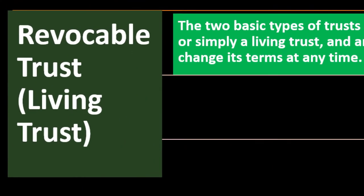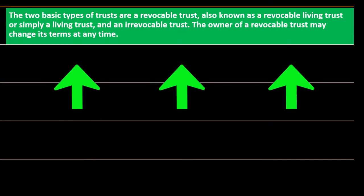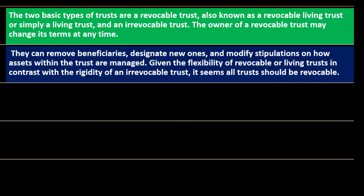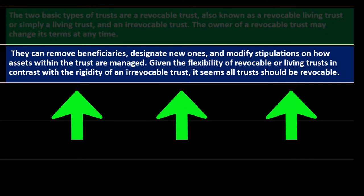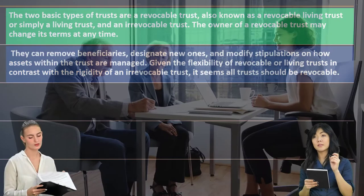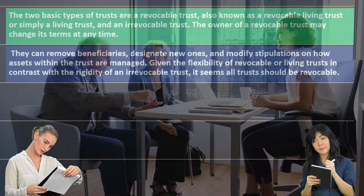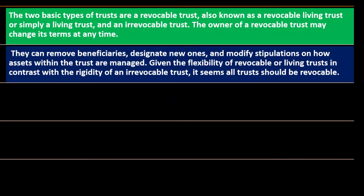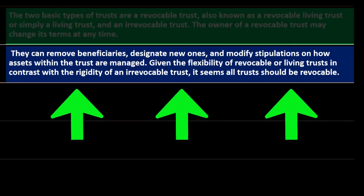The two basic types of trust are a revocable trust — also known as a revocable living trust or simply a living trust — and an irrevocable trust. The owner of a revocable trust may change its terms at any time: they can remove beneficiaries, designate new ones, and modify stipulations on how assets within the trust are managed. With a revocable trust, you still have control to change things to a large degree.